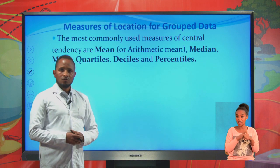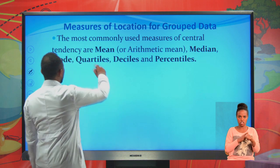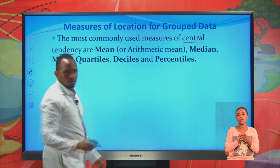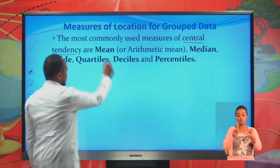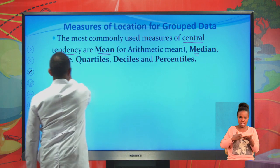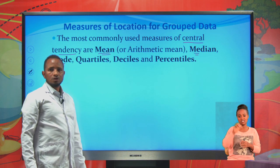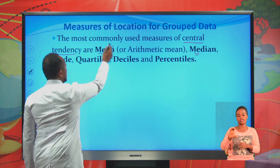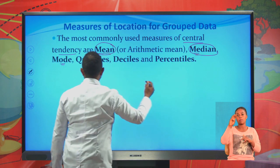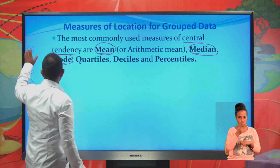Let's see first measures of location for grouped data. The most commonly used measures of central tendency, or measures of location, are mean, arithmetic mean, median, mode, quartiles, deciles, and percentiles. Today we'll focus on mean, median, and mode.